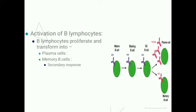Activation of B lymphocytes: B lymphocytes proliferate and transform into two varieties — plasma cells and memory cells. When B lymphocytes are transformed into plasma cells, their cytoplasm expands and is filled with granular endoplasmic reticulum. These plasma cells are ready to secrete antibodies.